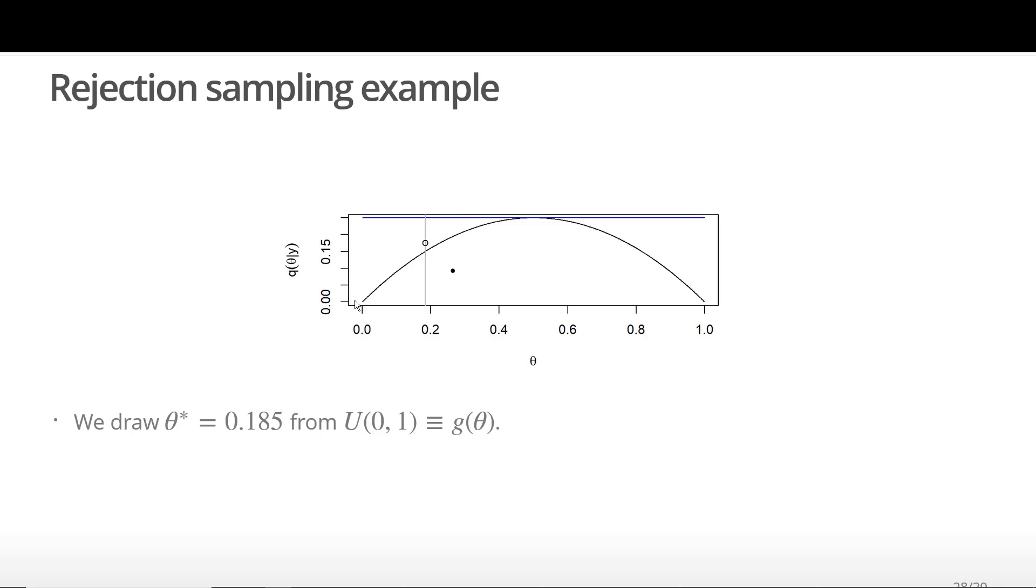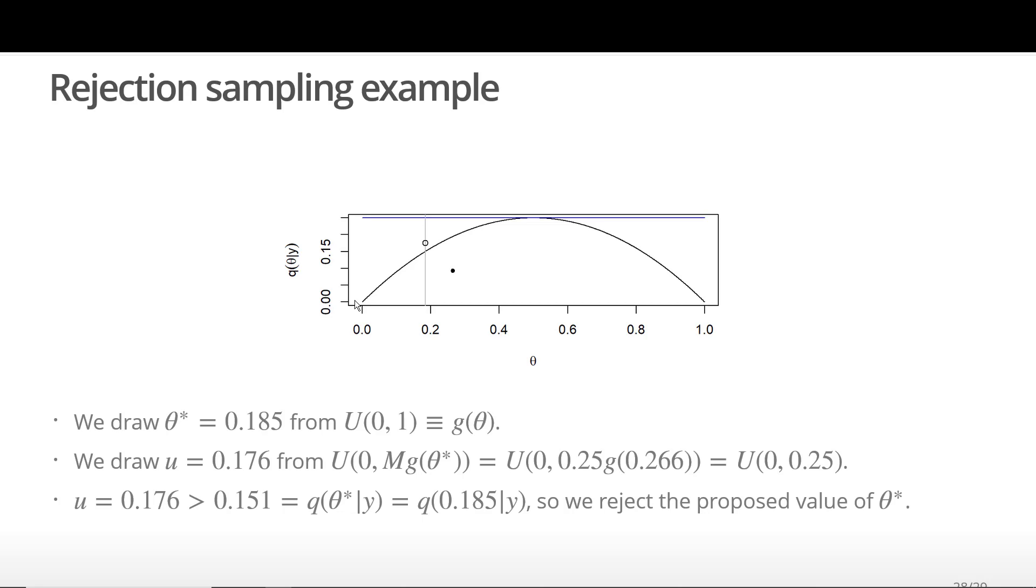Let's do a second example. We draw a new theta star from our proposal distribution. This time we get 0.185. Similar to before, we draw a value U from a uniform(0, 0.25) distribution since our bounding function is constant. This time we get U equal to 0.176. However, in contrast to last time, if we evaluate the target density at theta star, we get 0.151. Since U equal to 0.176 is greater than 0.151, we reject the proposed value of theta star. We will need to repeat this process to get a sample from our target distribution.